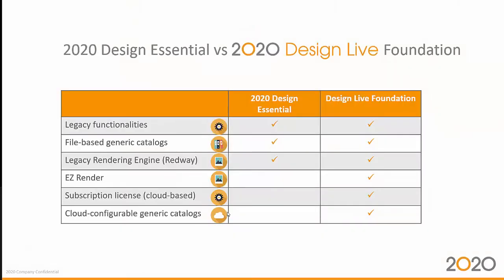Foundation correlates to Essential. It has all the same capability and provides access to the generic catalogs. But more, it has access to the latest Easy Render capability. It's a subscription license, which means it's a cloud-based license, so you no longer rely on a USB dongle key that you might lose or get stolen. Furthermore, it provides access to cloud configurable generic catalogs.